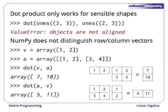Just as in mathematics though, dot only works for things with compatible shapes. For example, you cannot multiply a two-by-three matrix and another two-by-three matrix. NumPy complains that the objects aren't aligned. And please note that NumPy does not distinguish between row and column vectors. If v is a one-by-two vector, NumPy will happily calculate either of its products with a two-by-two matrix.